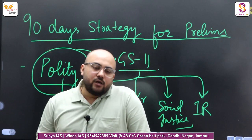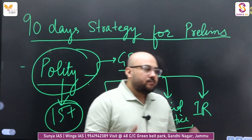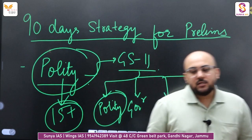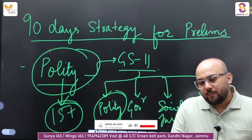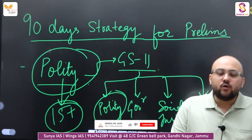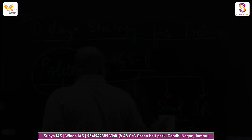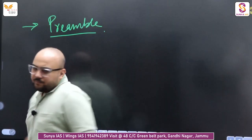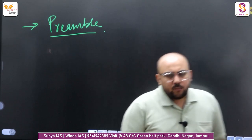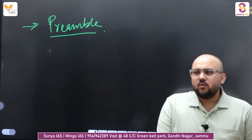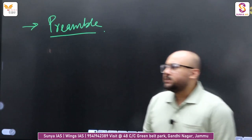If we look at polity further, there are important topics like fundamental rights, directive principles, preamble, and topics like the judiciary — Supreme Court, High Court, Parliament. It is quite extensive. When we talk about the 90-day strategy, let's start with the preamble. I think we have enough time — we don't have to rush.